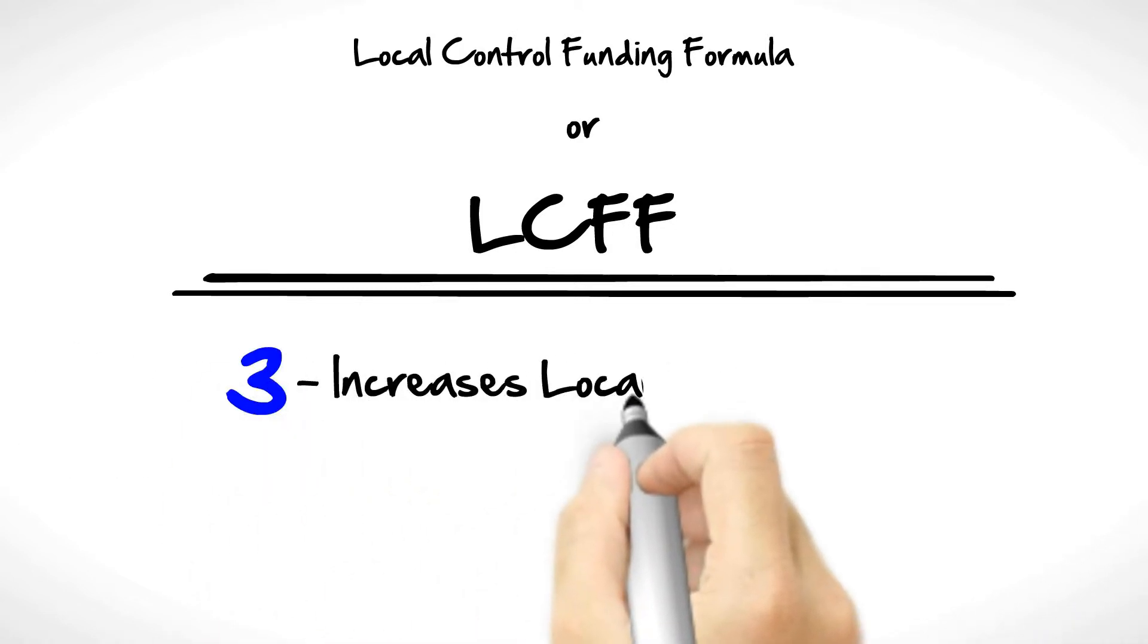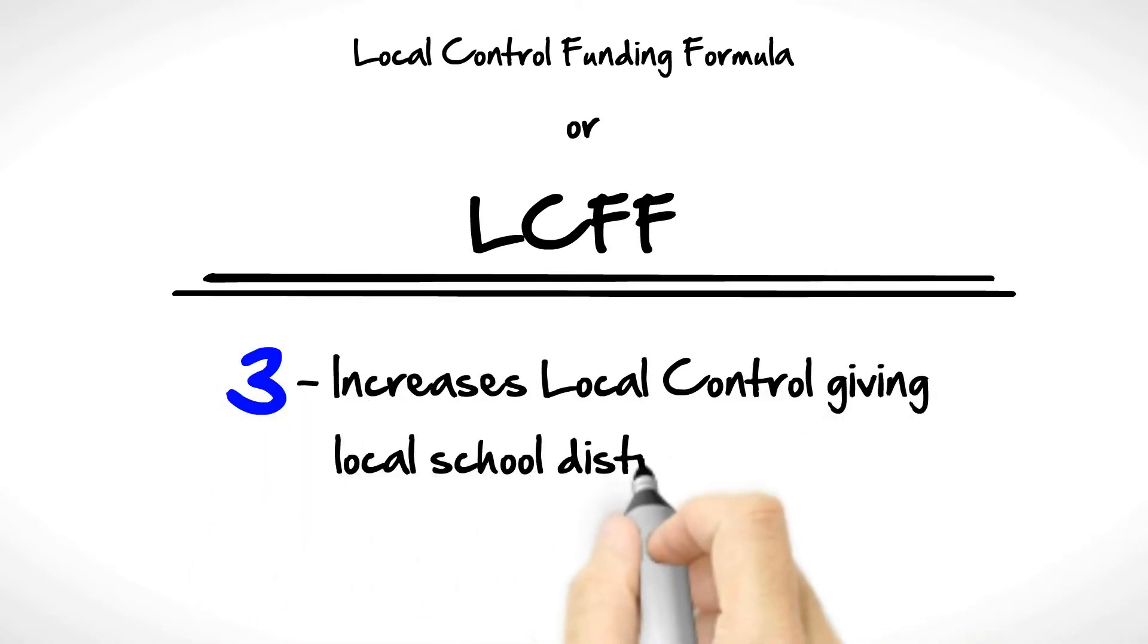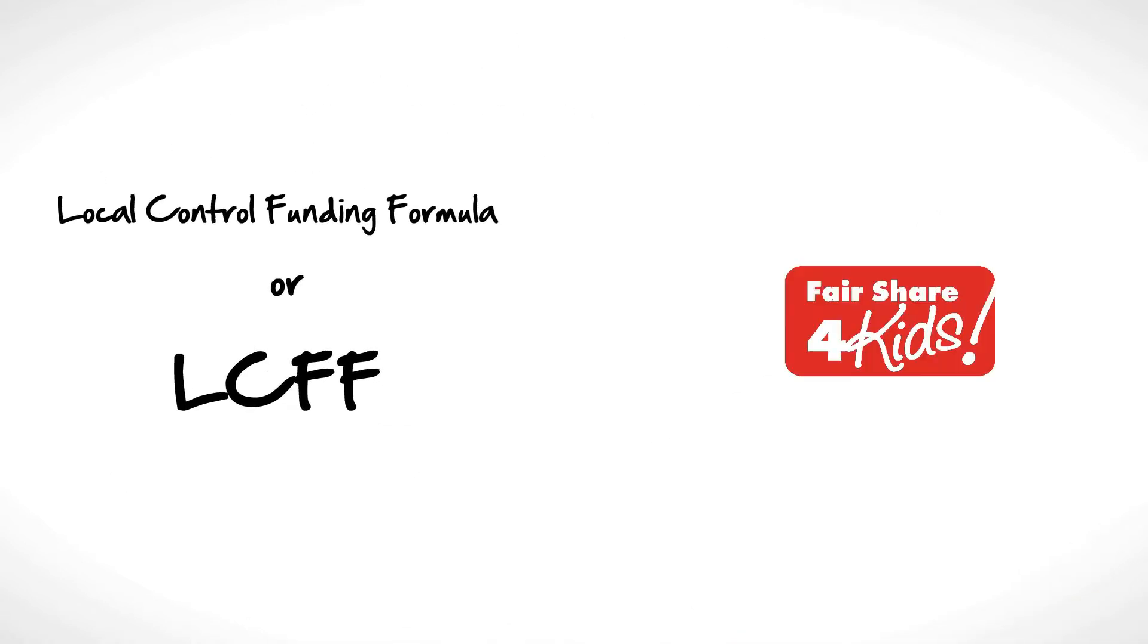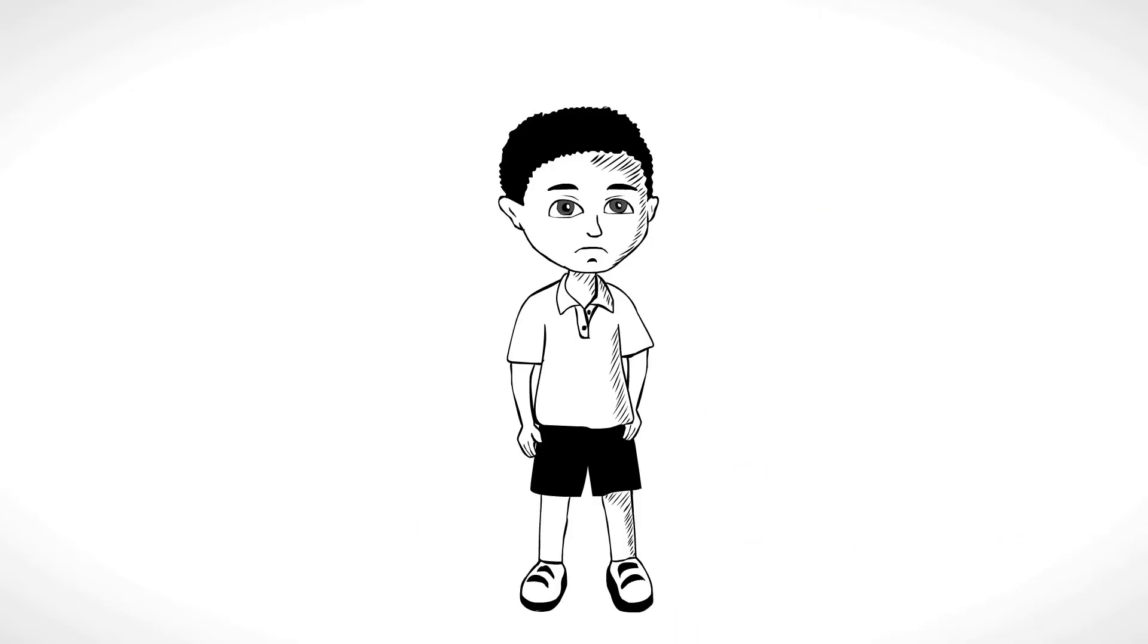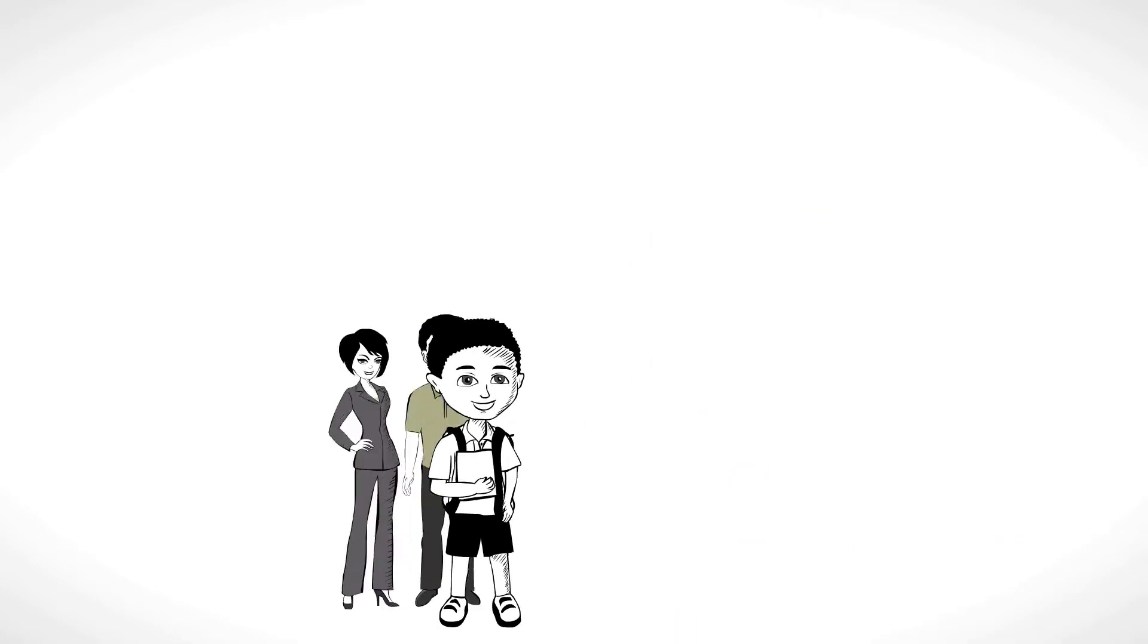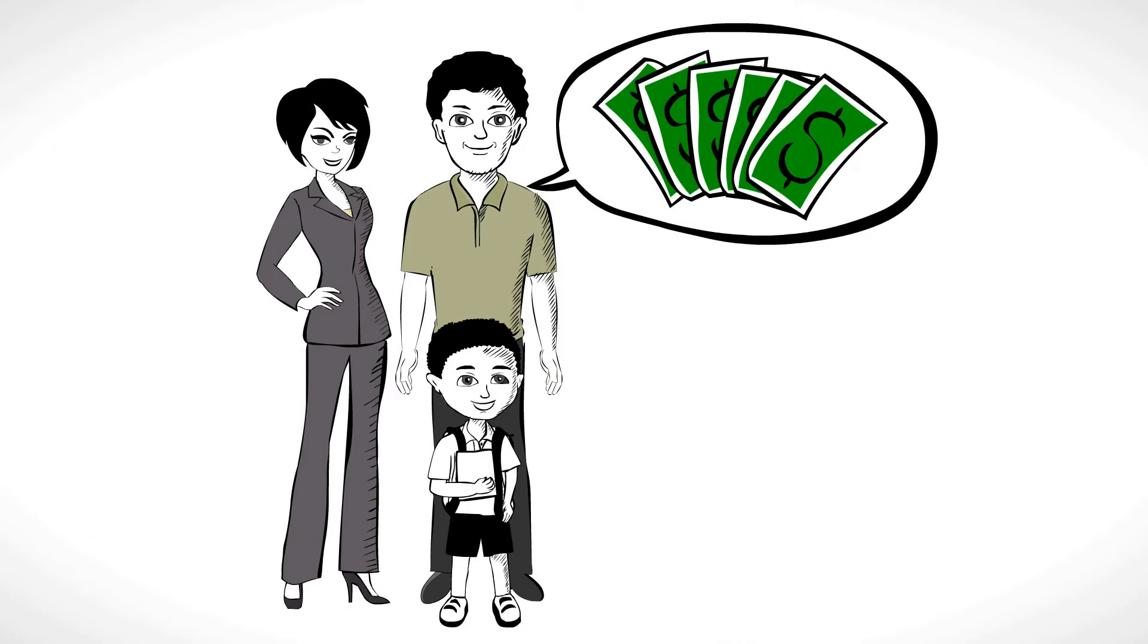Three: Increases local control, giving local school districts more options on how to best use funds. Fair Share for Kids supports this plan so long as low-income students receive the support they need and parents have a voice on how monies are spent.